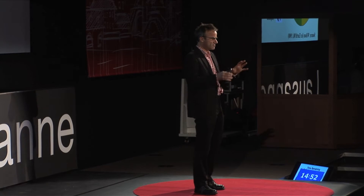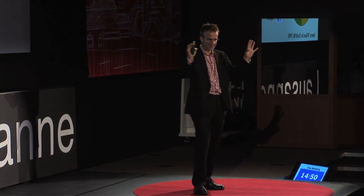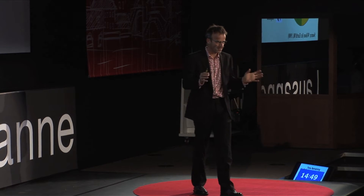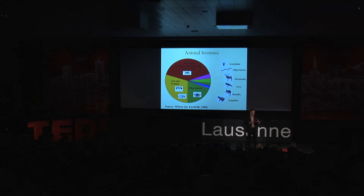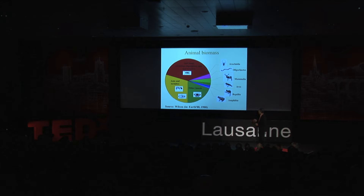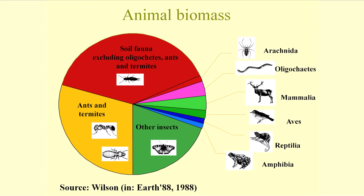Imagine you're in a tropical forest. You collect all animals you find and you weigh them. One important finding is that ants and termites account for one-third of the whole biomass — the weight of animals, not number, weight.